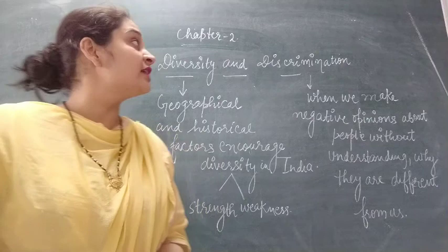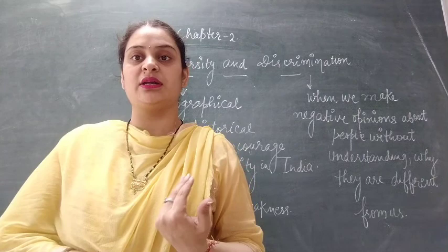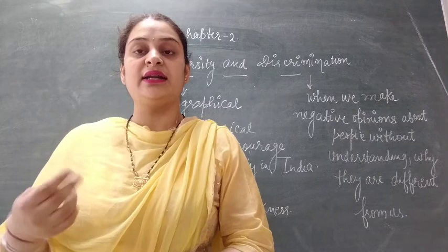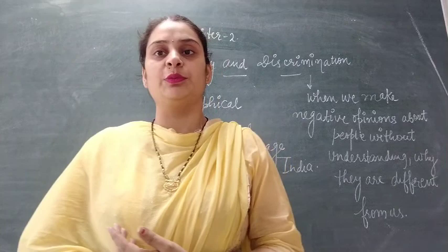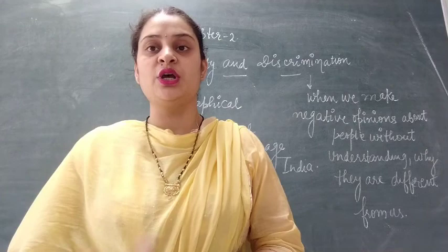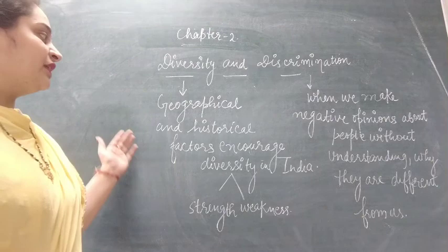Good morning students. Today we are going to start our second chapter of civics: Diversity and Discrimination. In the previous chapter we discussed the different aspects of diversity. Diversity means when there are different types of people who belong to different religions and castes, all living in the same place. That's why we always call India a diverse country, because in India there are different types of people who belong to different religions, speak different languages, and have different food habits.